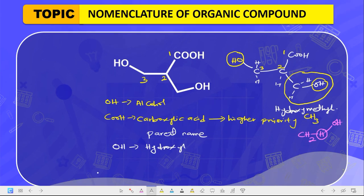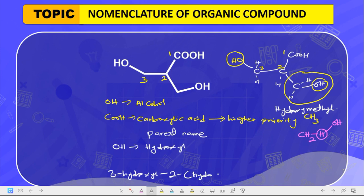The less bulky substituent — hydroxy — is at position three, so we write '3-hydroxy.' Then we name the bulky substituent — hydroxymethyl — at position two, placing it in brackets: '2-(hydroxymethyl).' Then we add the parent chain: 'propanoic acid.' We call it propanoic acid because it contains a three-carbon chain (1-2-3) as the longest continuous chain with the carboxylic acid functional group.